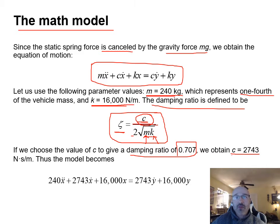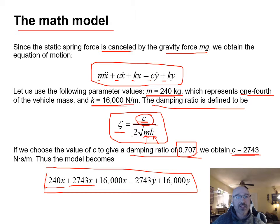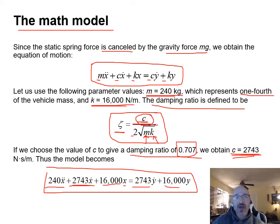With those values known, we plug them into our equation: 240·x-double-dot + 2743·x-dot + 16,000·x = 2743·y-dot + 16,000·y. This is our equation of motion with all known values substituted in.